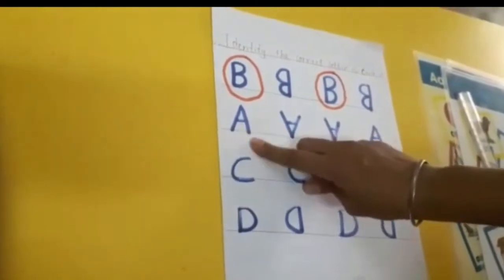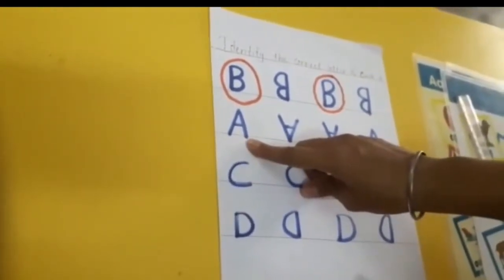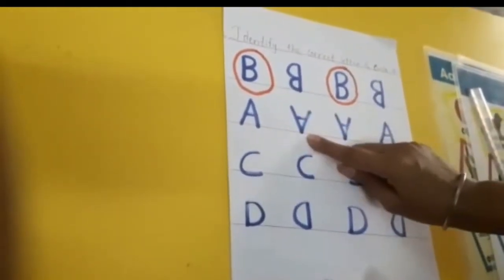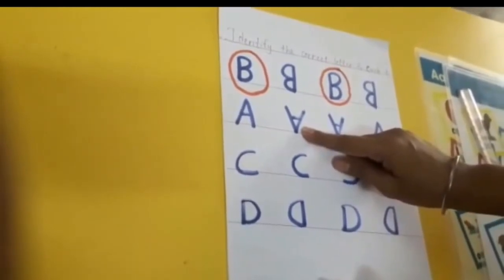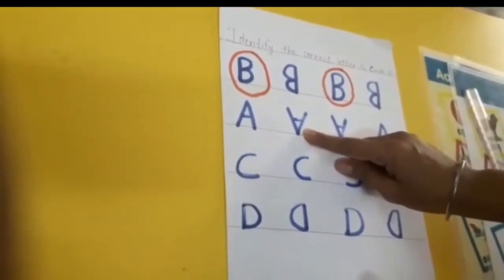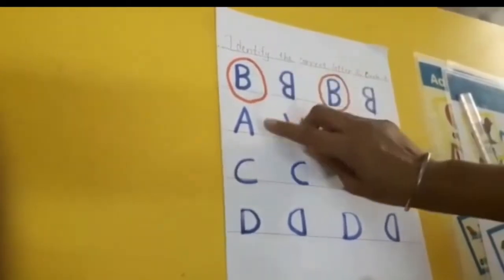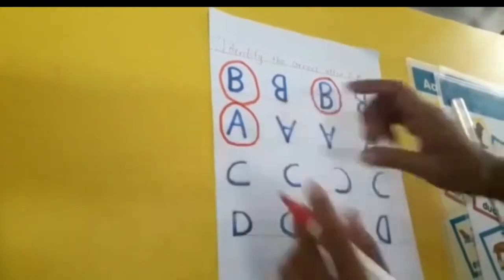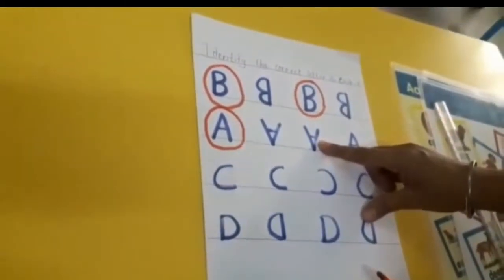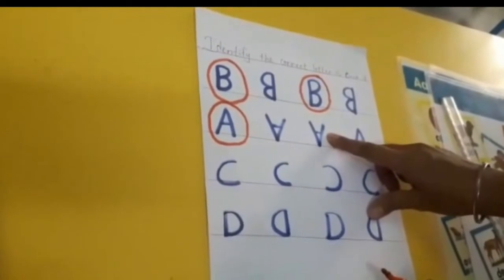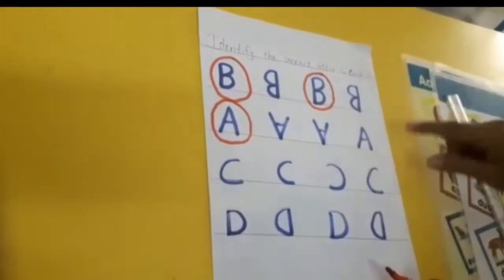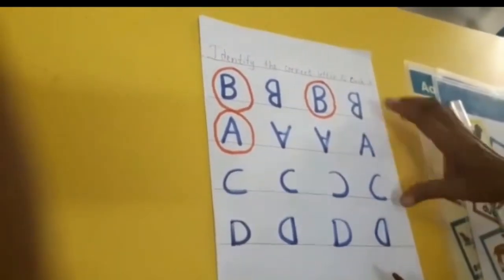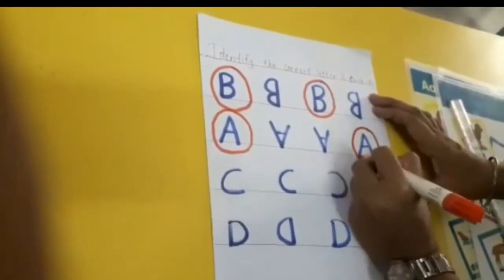Now let's move on to another letter. Which letter is this? This is letter A. This is also letter A — but is it written properly? No, so we will circle on this letter A. This is also letter A, but it is proper? No, so we will circle on this letter A. This is letter A — is it correct? Yes, so we will circle on this letter A.